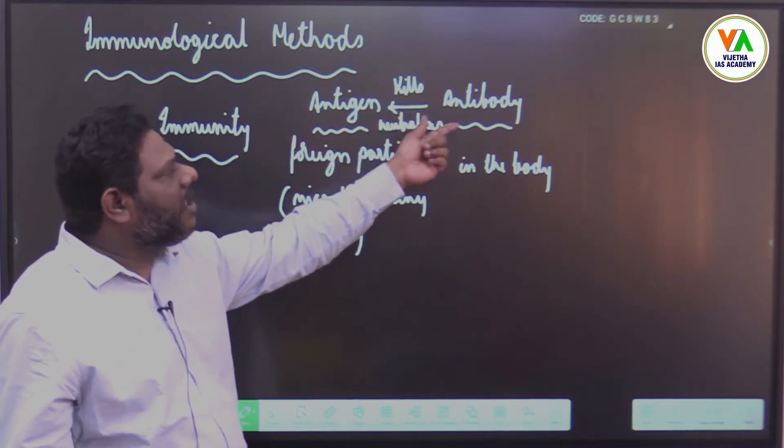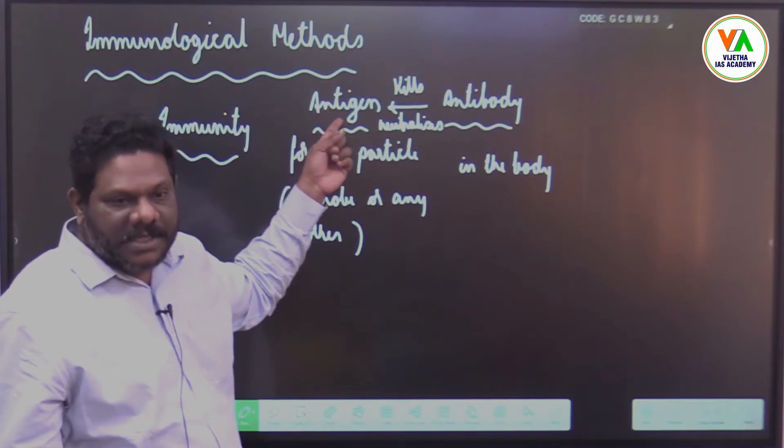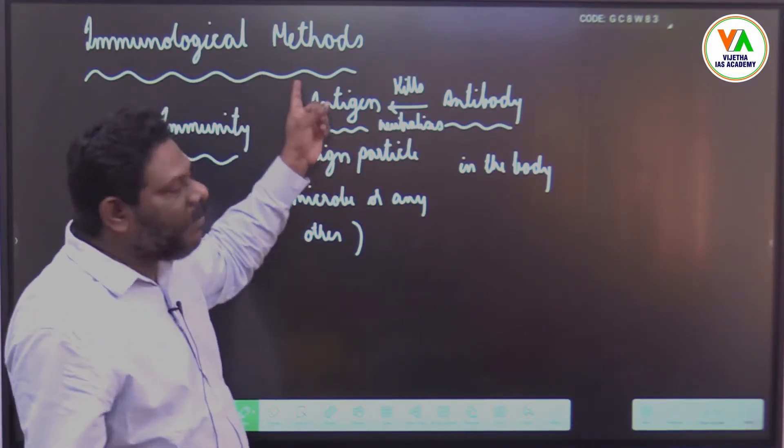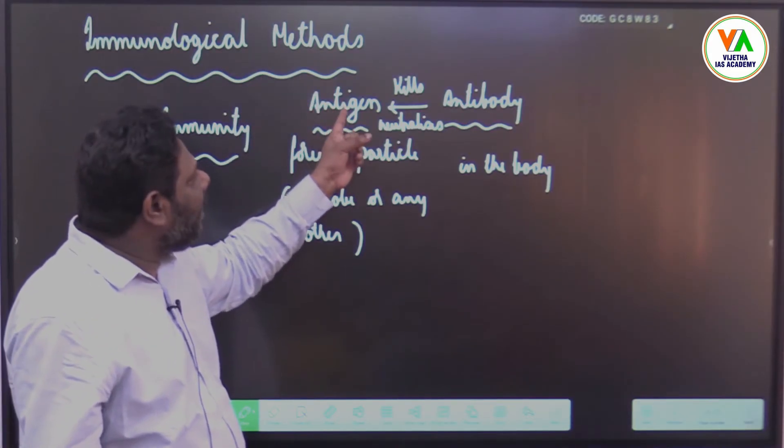Immunity is nothing but the body's response towards an antigen. In immunological methods, we are trying to detect antigen or antibody.